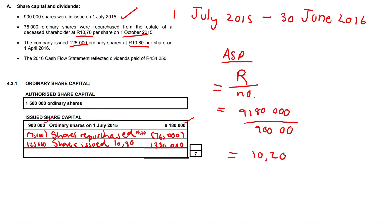And we just total. So 900,000 minus 75,000 plus 125,000 equals 950,000 shares. Do not abbreviate in your exams. Ordinary shares on 30 June 2016: the amount is 9,180,000 minus 765,000 plus 1,350,000, which gives you 9,765,000.